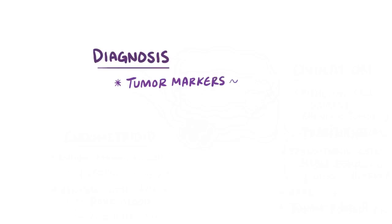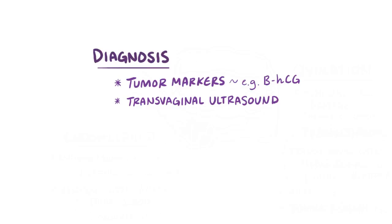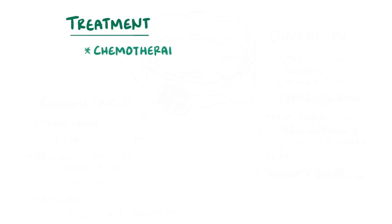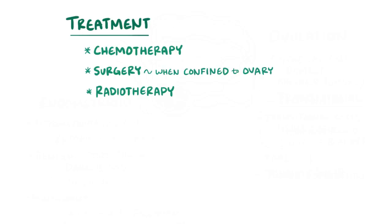Diagnosis of ovarian cancer typically involves looking for specific tumor markers like beta-HCG, as well as having a transvaginal ultrasound. Tumor biopsies are done to figure out whether a growth is benign or malignant. Imaging with a CT or MRI scan can be done to look for evidence of metastasis. Treatment typically involves chemotherapy, surgery, and sometimes radiotherapy. Surgery might be enough for malignant tumors confined to the ovary, whereas chemotherapy might be needed for diseases that have spread.